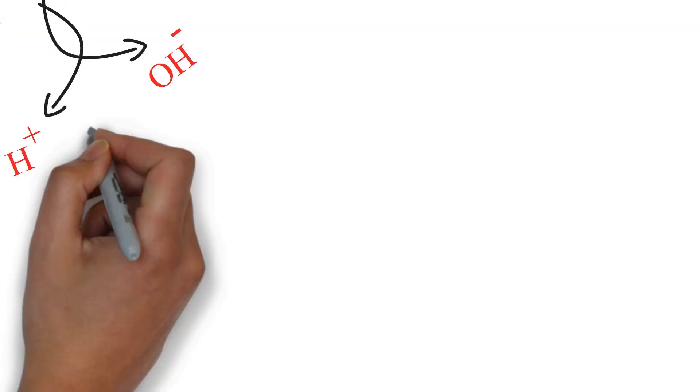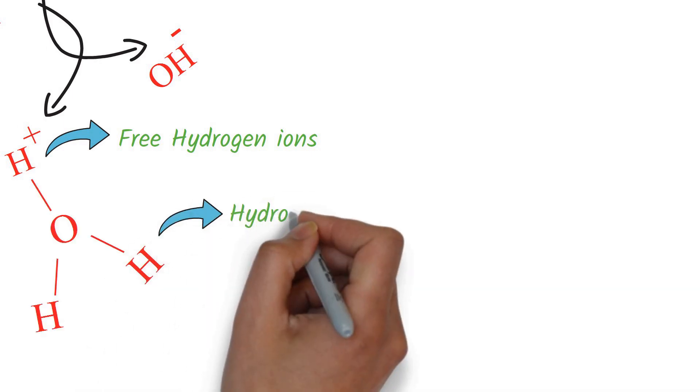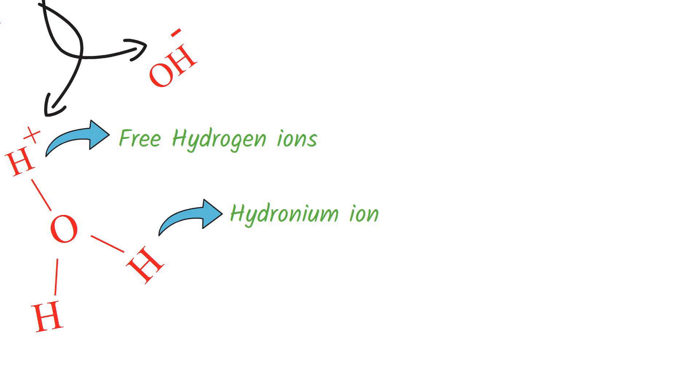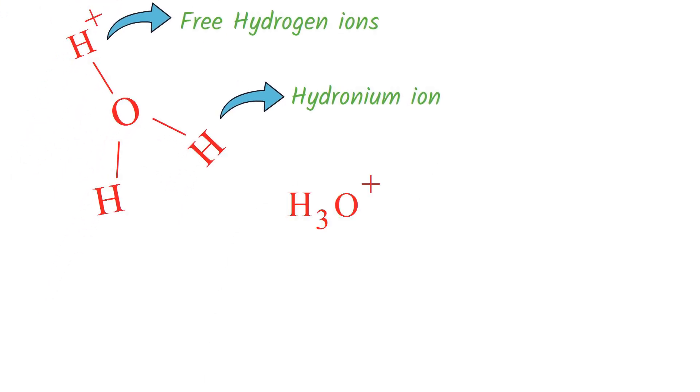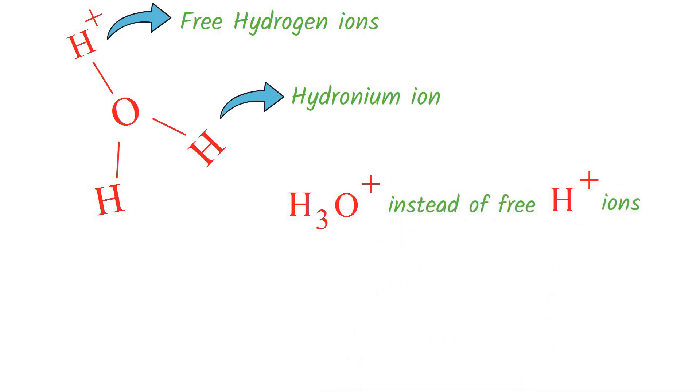However, you may not find free hydrogen ions in the water because the free hydrogen ions have a tendency to attach to the H2O molecule to form hydronium ion. This means you will always find H3O+ or hydronium ions in water instead of free H+ ions. So when we say hydrogen ions, that actually refers to hydronium ions.